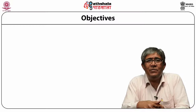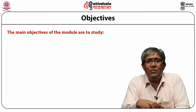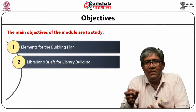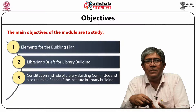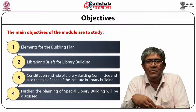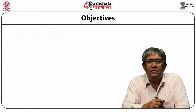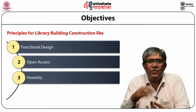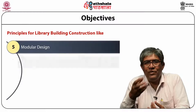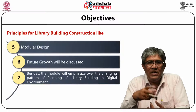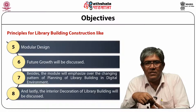So students, have a look on the major objectives of the module. The main objectives are to study elements for the building plan, library's brief for library building, constitution and role of library building committee, and also the role of head of the institute in library building. Further, the planning of special library building will be discussed, along with principles for library building construction like functional design, open access, flexibility, provision of areas, modular design, and future growth. The module will also emphasize the changing pattern of planning of library building in digital environment. And lastly, the interior decoration of library building will be discussed.